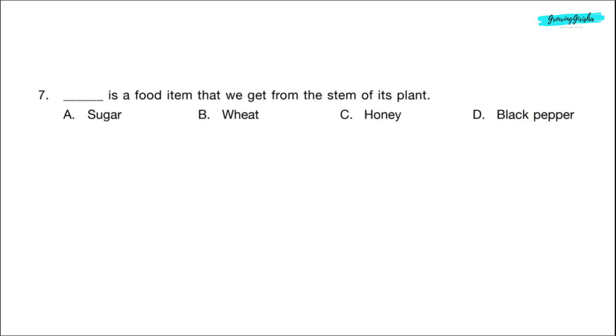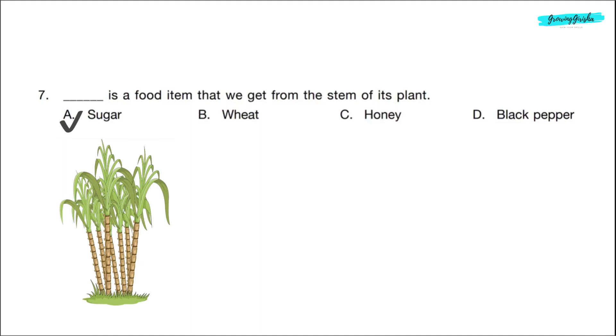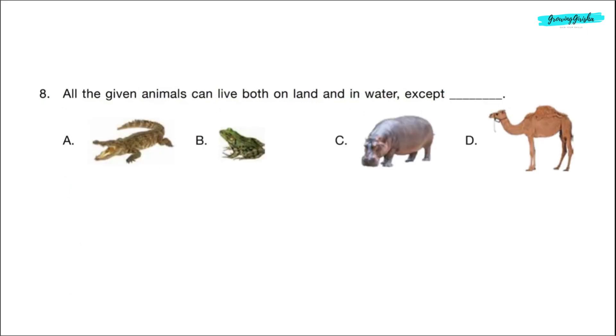Question 7. Dash is a food item that we get from the stem of its plant. Correct answer is option A, sugar. Sugar is a food item we get from sugar cane and we obtain sugar from the stem of the sugar cane. Question 8. All the given animals can live both on land and in water except dash. Among the 4 options, camel can live on land but not in water. So correct answer is option D. Camels live in deserts.